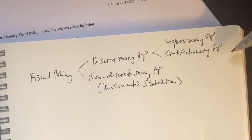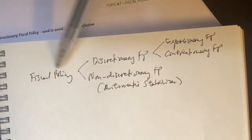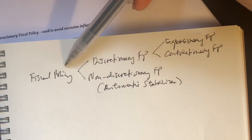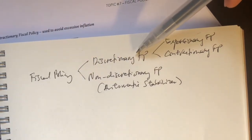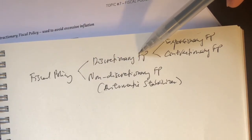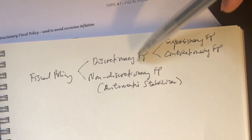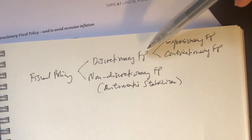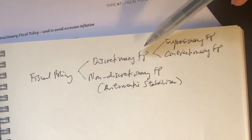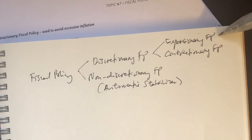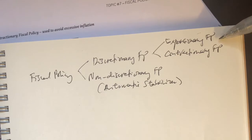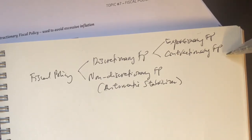A little bit of recap. When we began this topic, I did mention that there are two types of fiscal policy. One is discretionary fiscal policy, whereby the authorities would deliberately change the tools of fiscal policy — which are government spending and/or taxation — in order to address economic problems. In the last video, we learned about expansionary fiscal policy, which the government uses when there's a problem of recession and high unemployment. Today, we will look at contractionary fiscal policy, which is normally used to avoid excessive inflation.